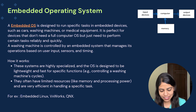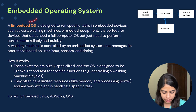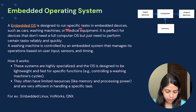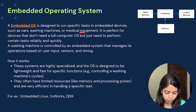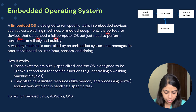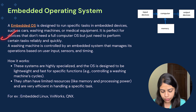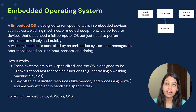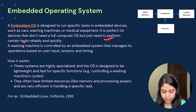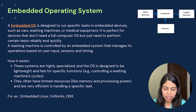So without any further ado, let's get started. An embedded operating system is designed to run specific tasks in embedded devices such as cars, washing machines, or medical equipment. It is perfect for devices that don't need a full computer operating system but just need to perform certain tasks reliably and quickly — for example, cars and washing machines where we need to perform certain tasks.